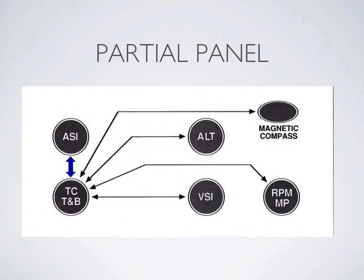Your turn coordinator is your primary instrument when flying under a partial panel. Unfortunately, it does not give you pitch information the way the attitude indicator does. That's why the airspeed indicator, which is right above it, can be a good proxy. If your power is set to a chosen setting and you do not change it, your airspeed would only increase if pitched down and decrease if pitched up — so you can use that as a proxy to make sure you're not climbing or descending.